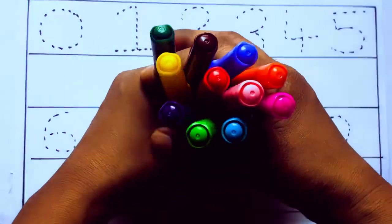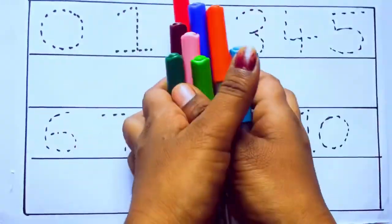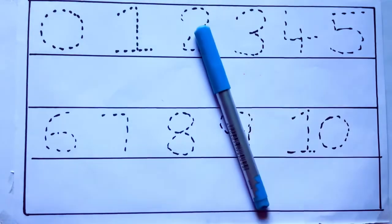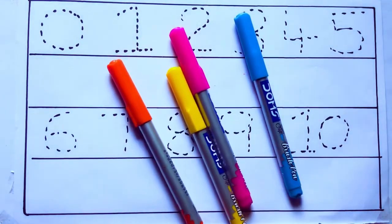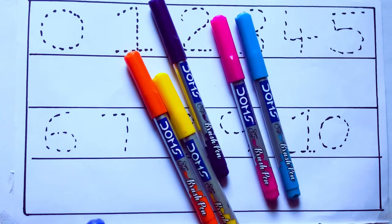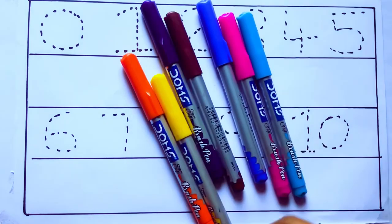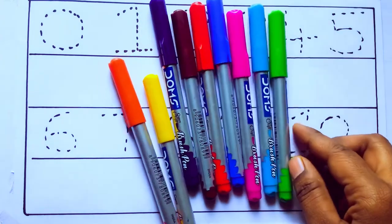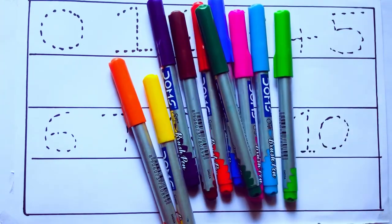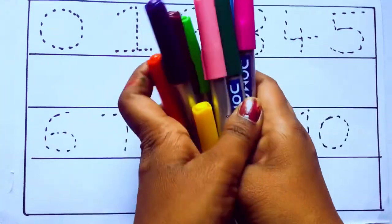Let's learn some colors. These are all the color pencils. Let's learn the names. Sky blue color, pink color, yellow color, orange color, violet color, blue color, brown color, red color, green color, and pink color.